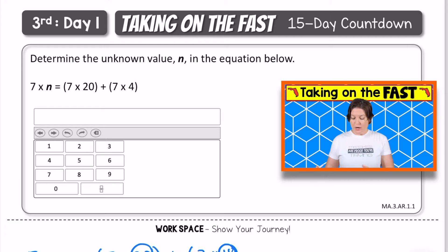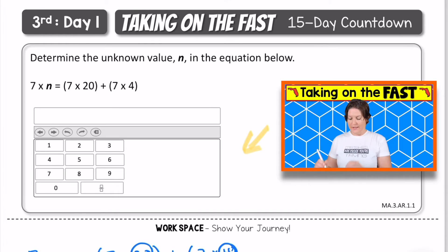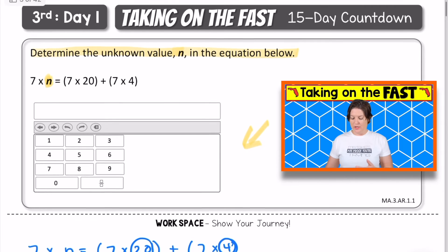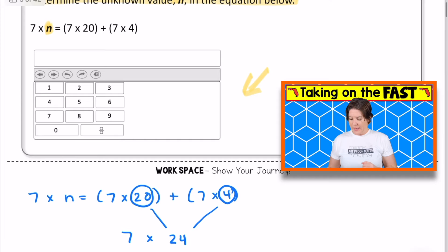So the next problem is our equation editor problem, meaning that we're using this equation editor tool right here. The problem says, determine the unknown value n in the equation below. So we can see that n is right here in the equation, 7 times n equals 7 times 20 plus 7 times 4 in parentheses. And so what I did was I just rewrote the problem right here, transferred it right down onto my paper, which is very important to do.